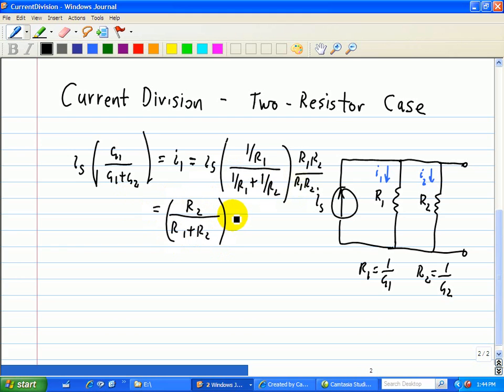So we multiply that by IS, and that's equal to I1. So basically, to find the current for two resistors, it's the opposite resistor divided by R1 plus R2, hence I2 should equal R1 over R1 plus R2 times IS. Now if the resistors are equal, we should expect that IS should be split equally, going through R1 and R2, since the resistors are equal.